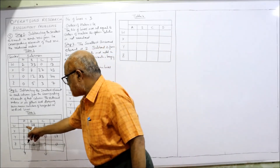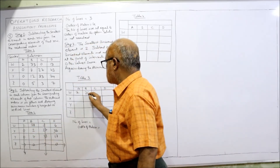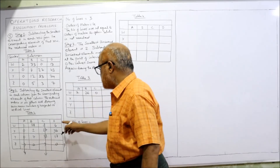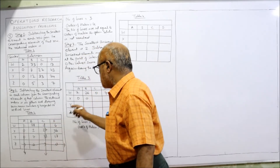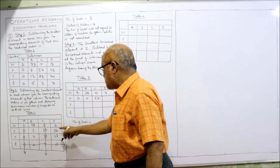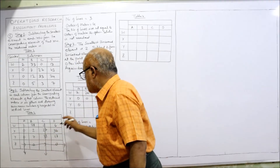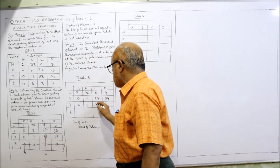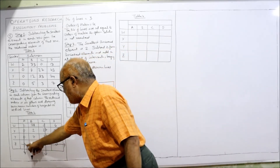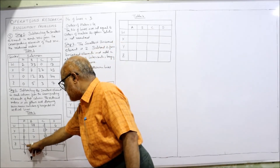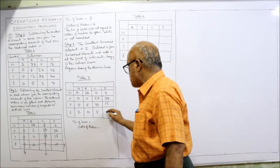Applying step 3: first row — 2 as it is (covered), 28 minus 2 is 26, 0 covered same value, 6 minus 2 is 4. Second row — 0 as it is, 2 minus 2 is 0, 27 as it is, 36 minus 2 is 34. Third row — 0 as it is, 7 minus 2 is 5, 13 as it is, 17 minus 2 is 15. Last row — 0 plus 2 is 2 (intersection point), 0 as it is (covered), 3 plus 2 is 5, 0 as it is.